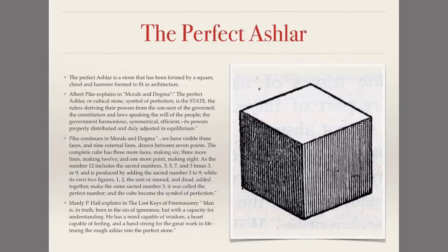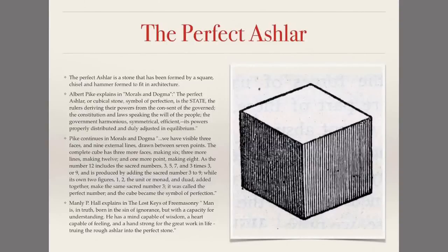So when we see the perfect Ashlar we're looking at a symbol of perfection — this is what we strive to be. Manly P. Hall also explains in The Lost Keys of Freemasonry that man is in truth born in the sin of ignorance, but with the capacity for understanding. He has a mind capable of wisdom, a heart capable of feeling, and a hand strong enough for the great work in life: truing the rough Ashlar into the perfect stone. The perfect Ashlar is what we are striving to be, and we must strive to be, always.